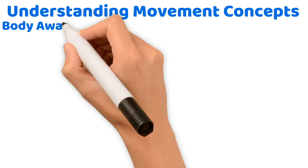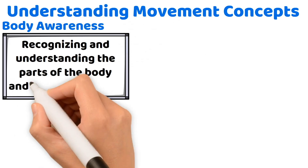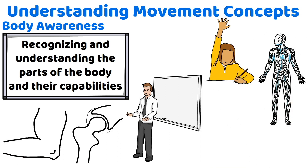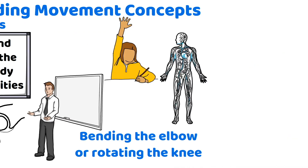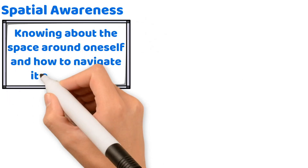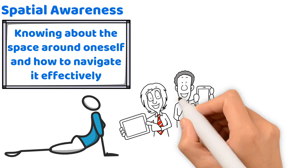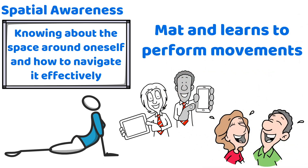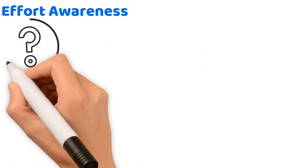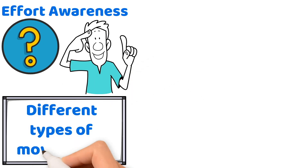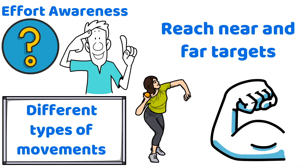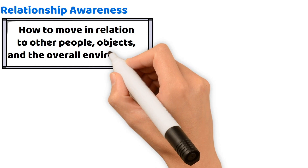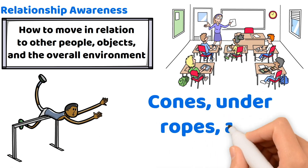Understanding movement concepts: body awareness means recognizing and understanding the parts of the body and their capabilities. Teach students to identify how joints like elbows and knees bend and move, pointing to and naming body parts as they perform various movements. Spatial awareness is knowing about the space around oneself and how to navigate it effectively — use yoga poses on a mat to demonstrate personal and shared space. Effort awareness is understanding the amount of energy required for different movements; when teaching how to throw a ball, instruct students on adjusting their force to reach near and far targets. Relationship awareness is learning how to move in relation to other people, objects, and the environment — set up an obstacle course where students navigate around cones, under ropes, and through hoops.